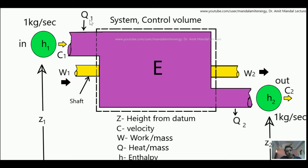Work input is by the shaft and heat input is going in, as you can see. From the other end, when the fluid is coming out — taking the same unit mass — it comes out with enthalpy content H2, velocity C2, and height from datum Z2. The work output by the right-hand shaft is W2 per unit mass, and Q2 is the heat output — heat rejected — per unit mass.